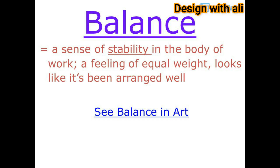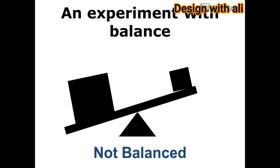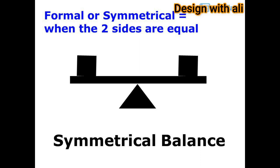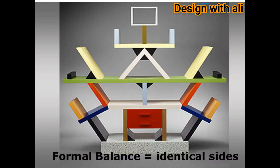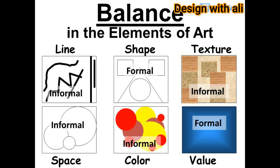Balance equals a sense of stability in a body of work — a feeling of equal weight, arranged well. Formal or symmetrical balance is when the two sides are equal. Informal or asymmetrical balance means there is balance but the two sides are not the same. Formal balance equals identical sides.